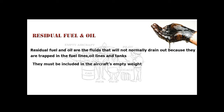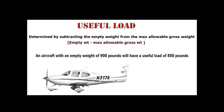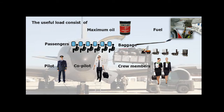Useful Load is determined by subtracting the empty weight from the maximum allowable gross weight. An aircraft with an empty weight of 900 lbs will have a useful load of 850 lbs. Useful load consists of: maximum oil, fuel, passengers, baggage, pilot, co-pilot, and crew members.